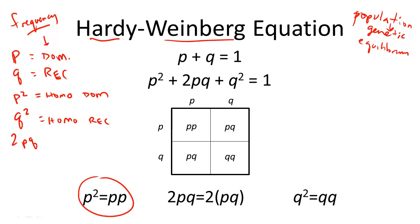And if you need to review these concepts, definitely go back to our videos on genetics. And 2pq, or a dominant and recessive combination, refers to a heterozygous individual. So these are important to remember before we begin.